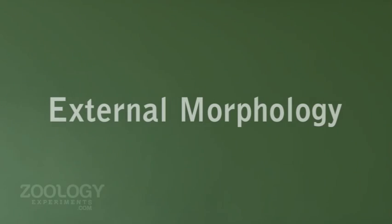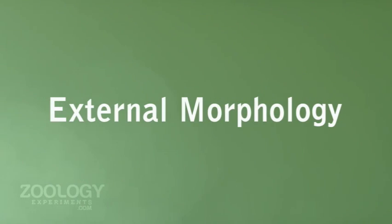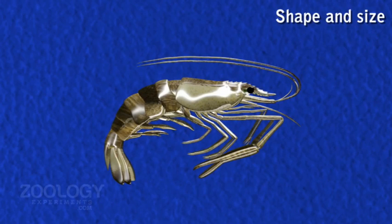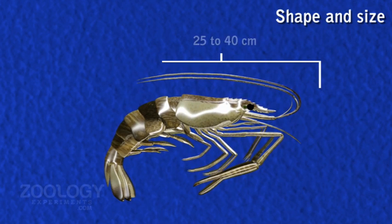External morphology: shape and size. The body of the prawn is elongated, more or less spindle-shaped, and bilaterally symmetrical, which supports least resistance in swimming. It measures twenty-five to forty centimeters in length.